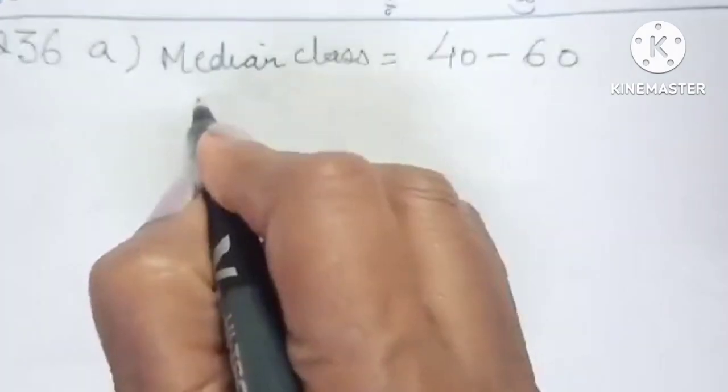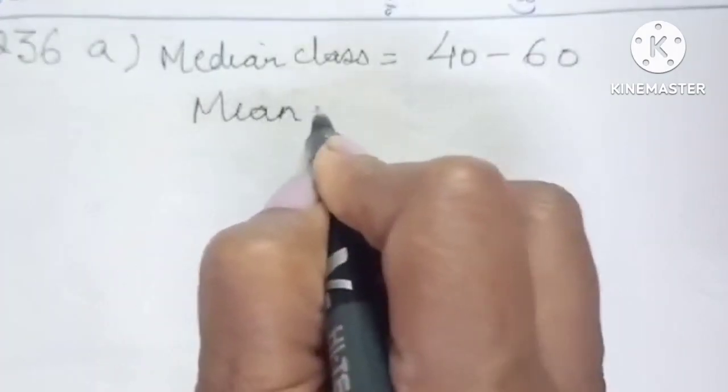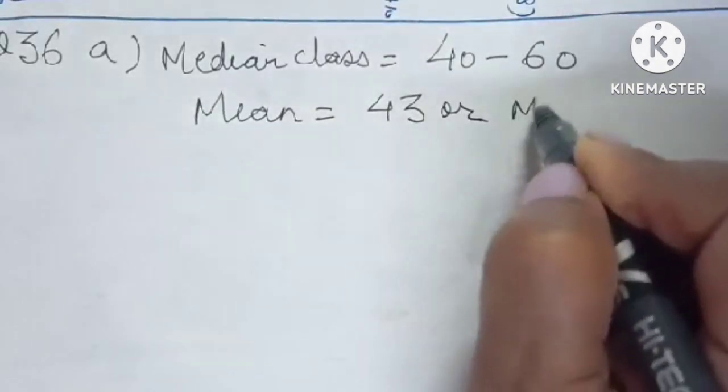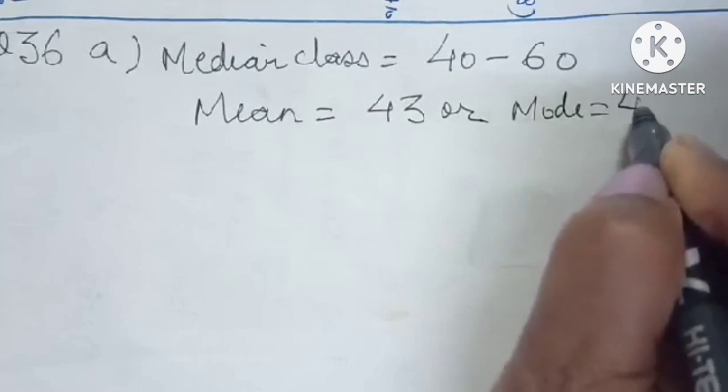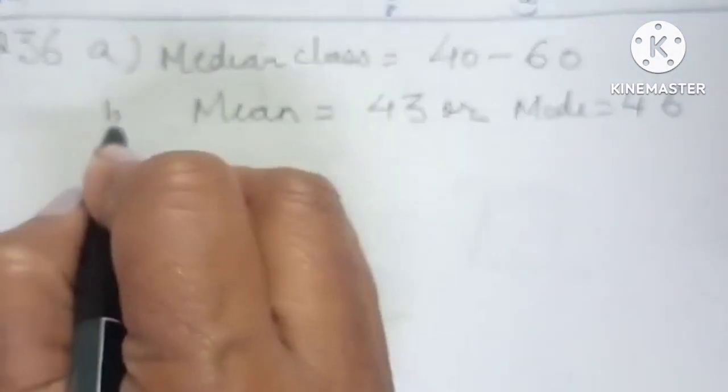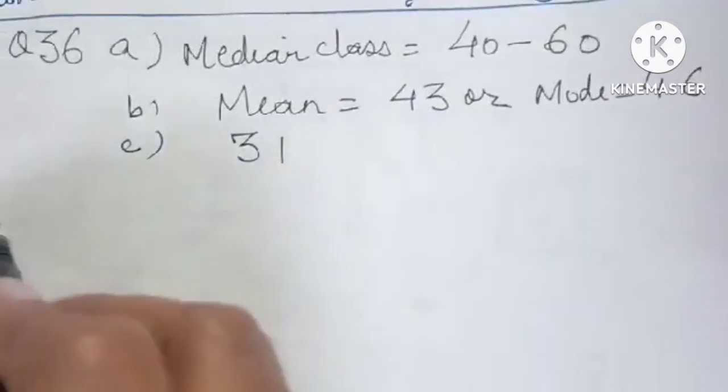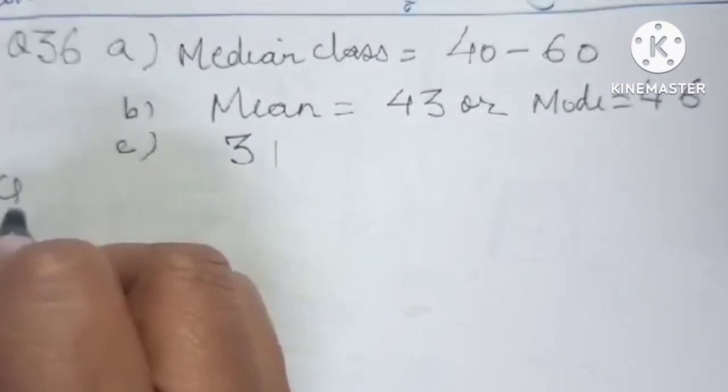Then question number 36. The first part is median class which is 42, 60. Mean comes out to be 43, and the or part mode comes out to be 46 seconds. Put the units, and then for the third part, answer is 31.